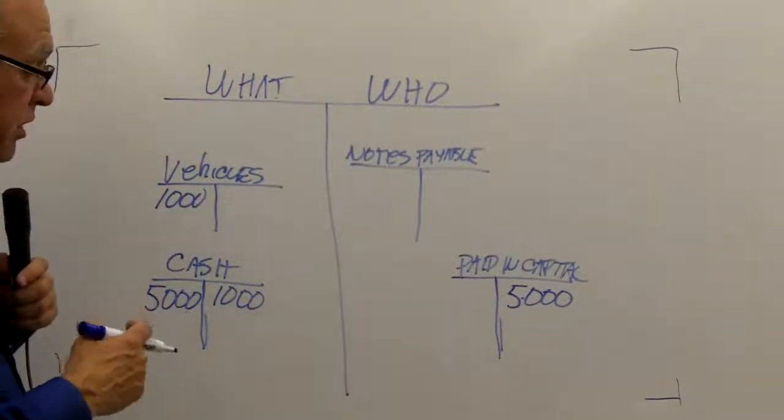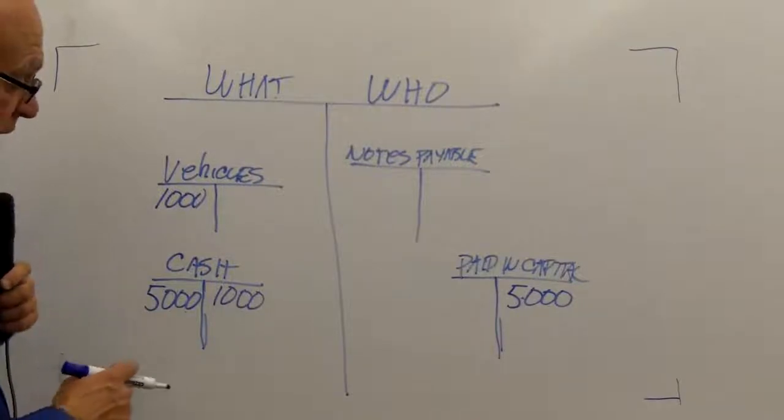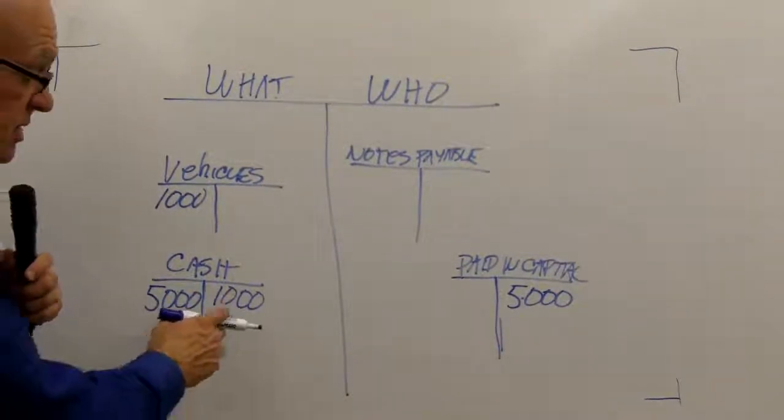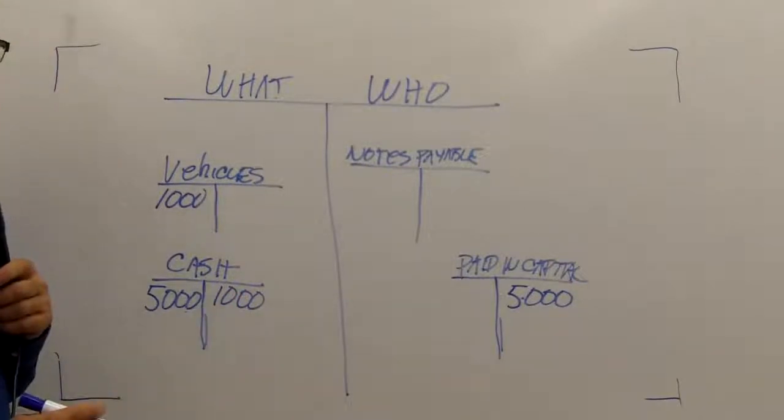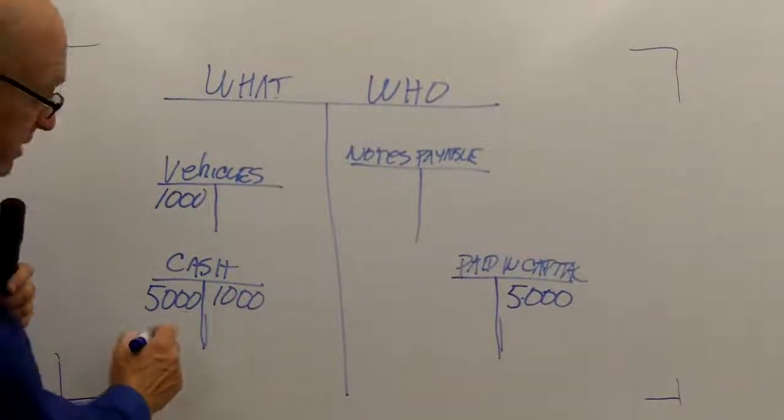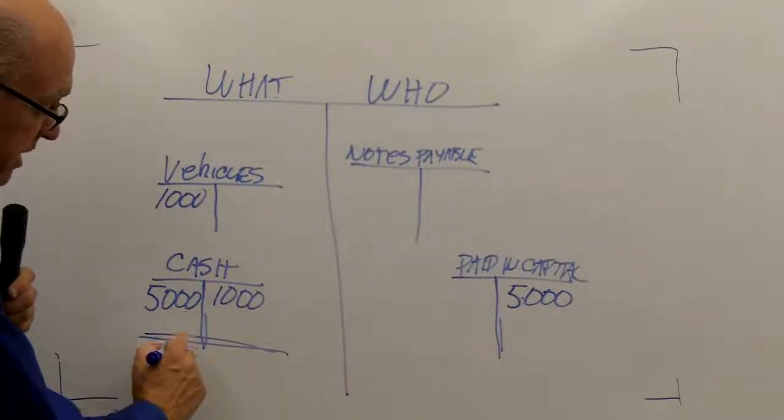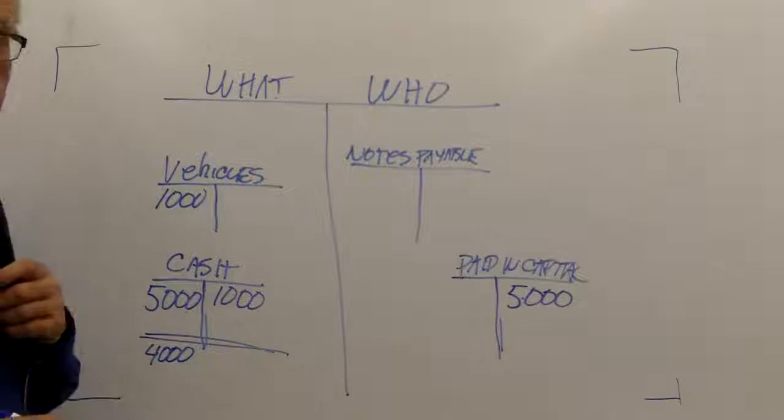Let me show also how we read the balance in an account. My cash account. I have a left side, $5,000. A right side, $1,000. That means, if I were to take right now a balance of that account, it's $4,000. And it's on the left-hand side.